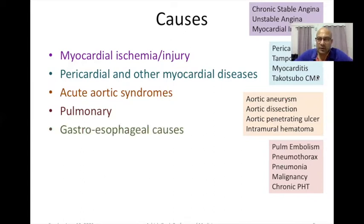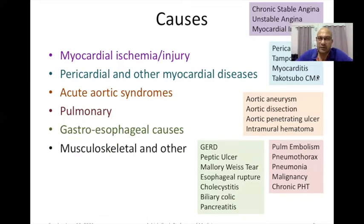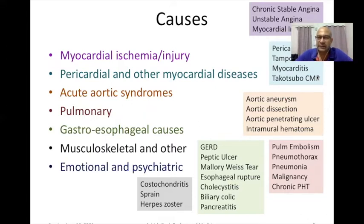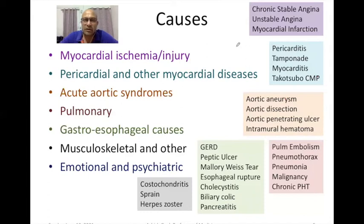There could be gastroesophageal causes — gastroesophageal reflux disease, peptic ulcer disease, Mallory-Weiss tear, esophageal rupture, cholecystitis, biliary colic, or pancreatitis. There could be musculoskeletal and other disorders such as costochondritis, sprain, or herpes zoster. And of course, there can be emotional and psychiatric disorders also. This is a huge and long list, but by no means comprehensive. This slide covers some of the most important causes of chest pain.